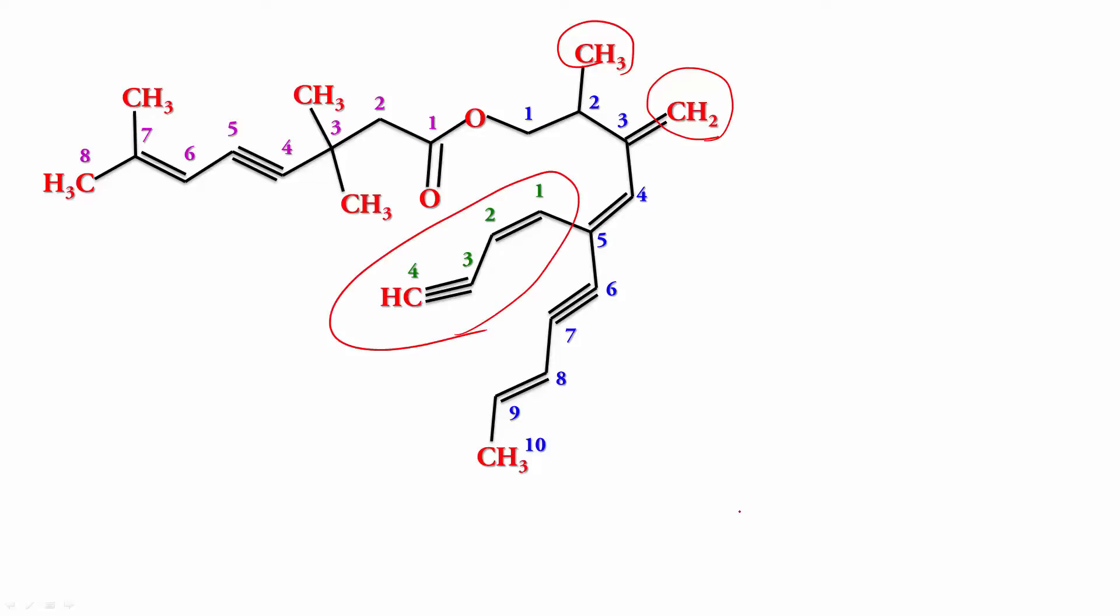And what will you call this one? This is going to be Bute-1-en-3-ynyl. So it's going to start with this one. So it's going to be 5 Bute-1-en-3-ynyl. And on position number 2 you have methyl. 2-methyl, 3-methylidine Deca-4,8-dien-6-ynyl.